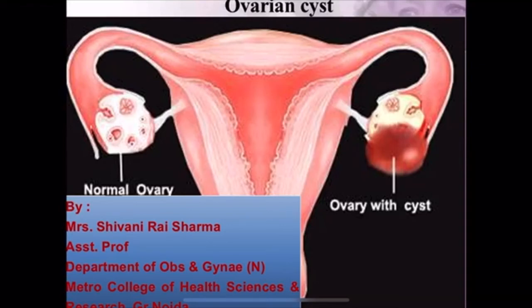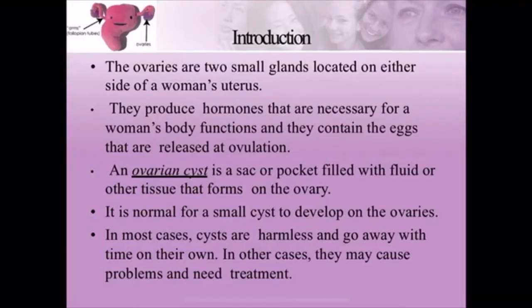Hello everyone, today we will discuss the topic of ovarian cysts. First comes the introduction. The ovaries are two small glands located on either side of a woman's uterus. We have studied the anatomy and physiology of the uterus, so you should know that the ovaries are located on the uterine sides. They produce hormones necessary for a woman's body functions and contain eggs that are released at ovulation.